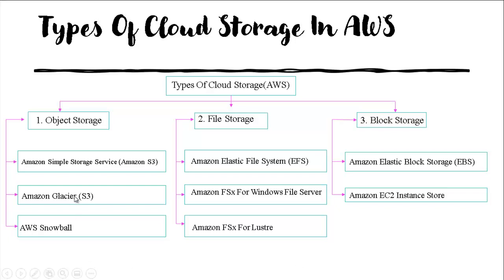Amazon Glacier is a legacy service that was used by Amazon a long time ago, but now Amazon Glacier has been migrated into S3, so it is called Amazon Glacier S3. In our free tier, we can access and configure Amazon S3. Amazon Snowball is a paid service. EBS storage is a free tier eligible service. Amazon FSx for Windows File Server and Amazon FSx for Lustre are paid services.